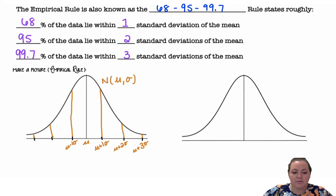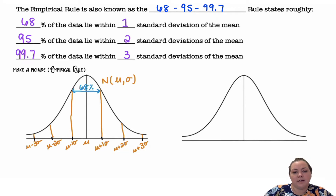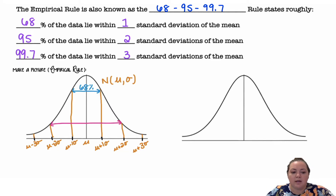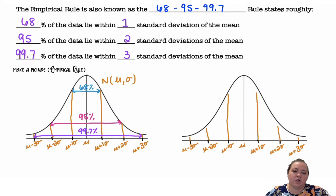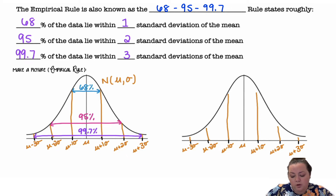As I move to the left, I'm subtracting one standard deviation each time. 68% of the data are plus or minus one standard deviation from the mean, 95% are plus or minus two standard deviations, and 99.7% is plus or minus three standard deviations.